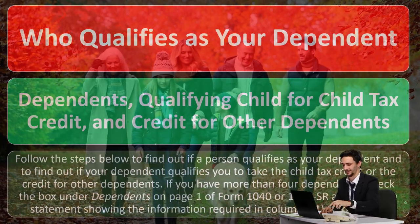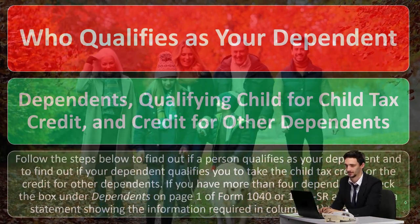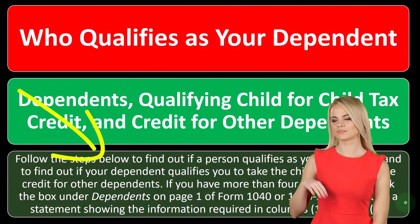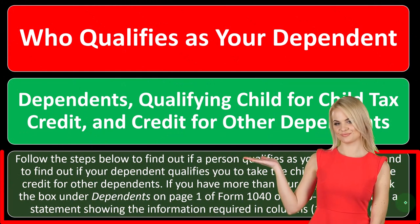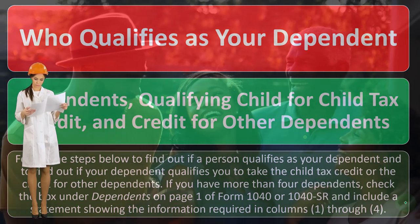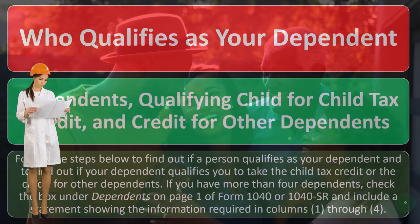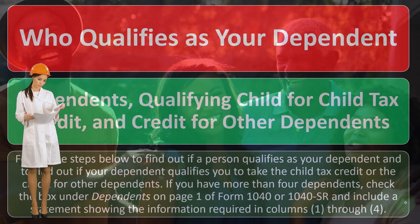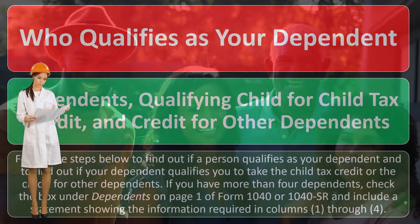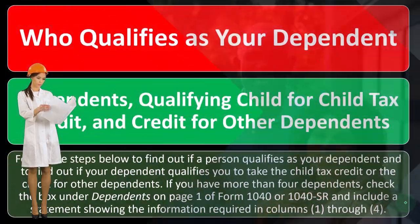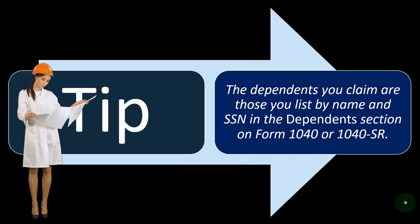Follow the steps below to find out if a person qualifies as your dependent and to find out if your dependent qualifies you to take the child tax credit or the credit for other dependents. If you have more than four dependents, check the box under dependents on page four of Form 1040 or 1040-SR and include a statement showing the information required in columns one through four, since there's only limited space on the first page.